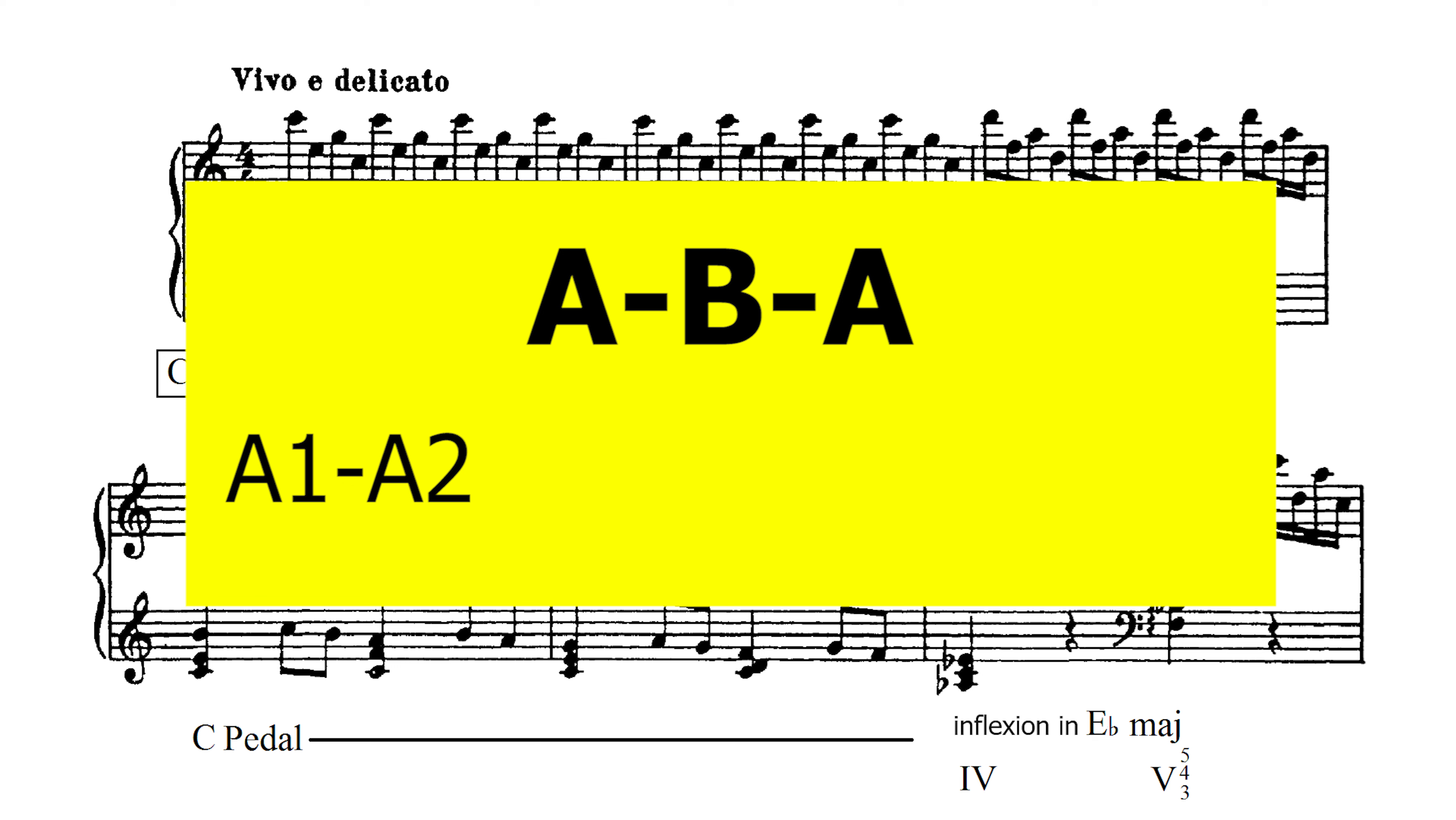After the A section, we have the middle B section. This B section itself has a ternary form with B1 being in E Phrygian, B2 a short sondi intermetto in C, followed by a repetition of the B1 section in E Phrygian again.